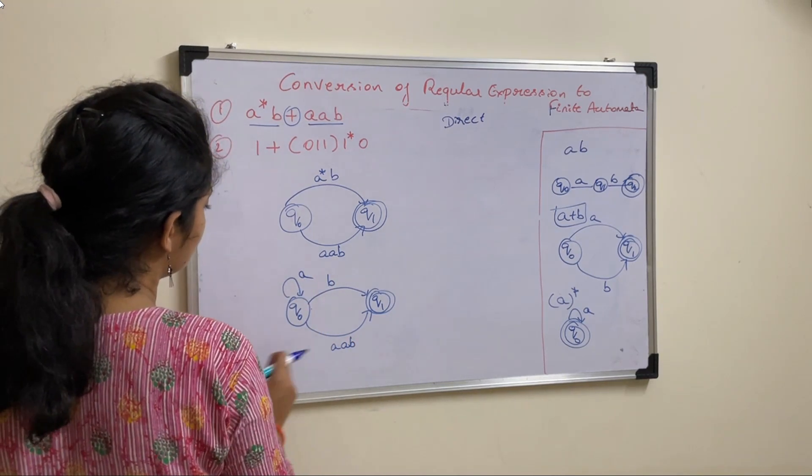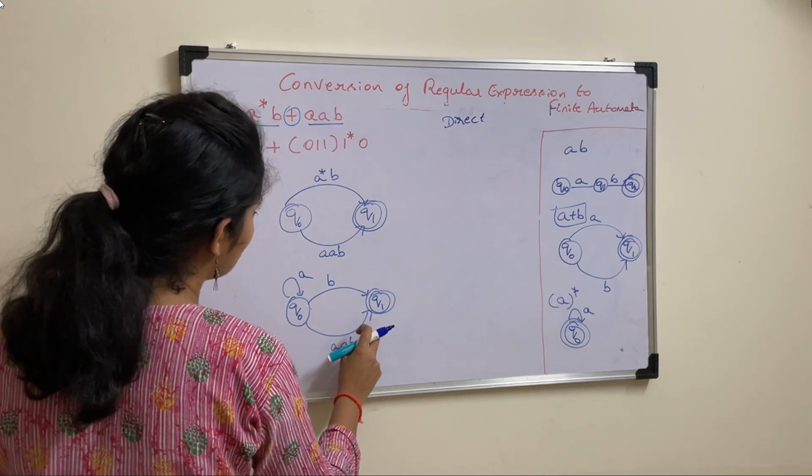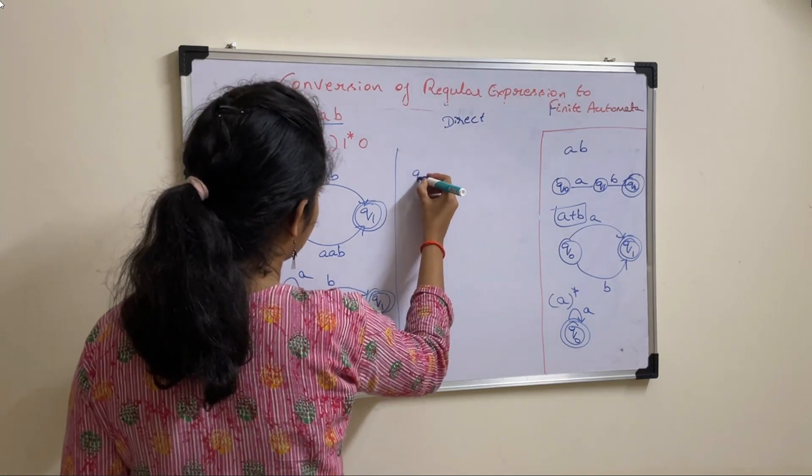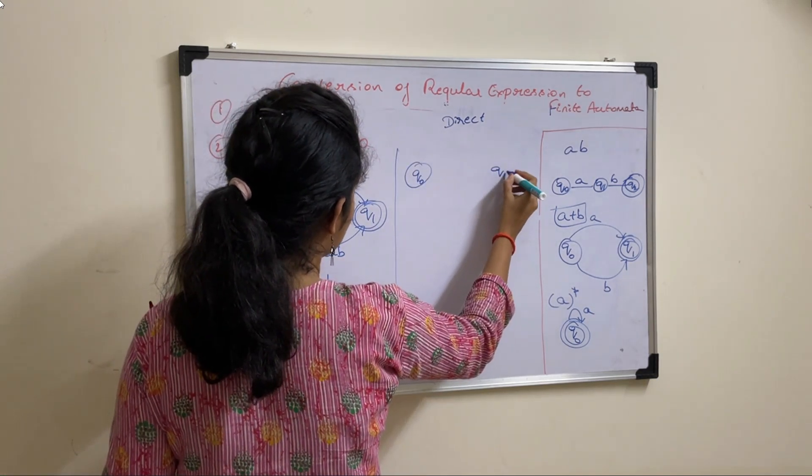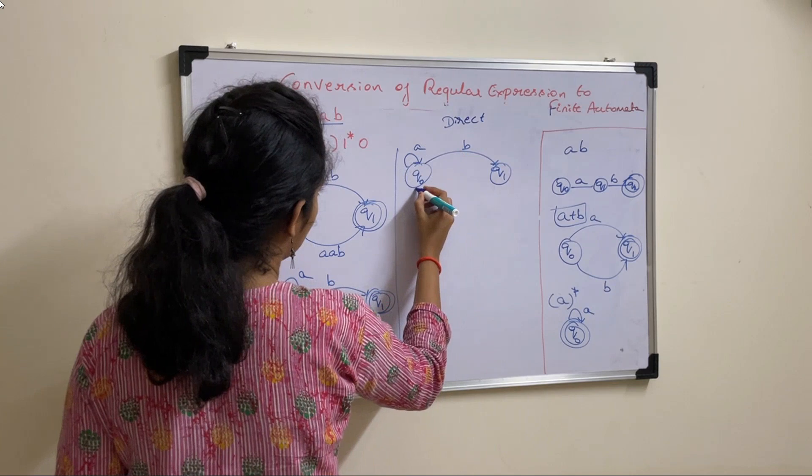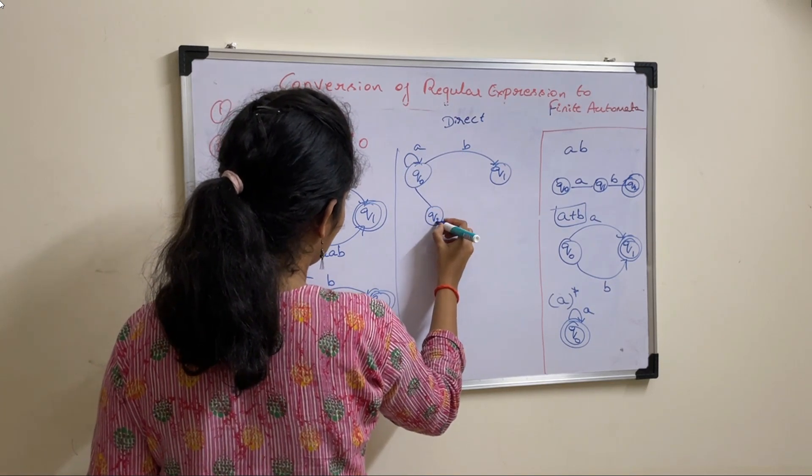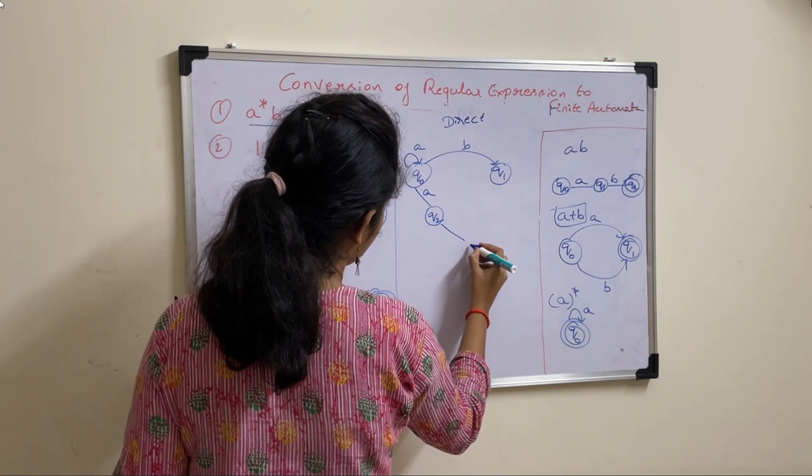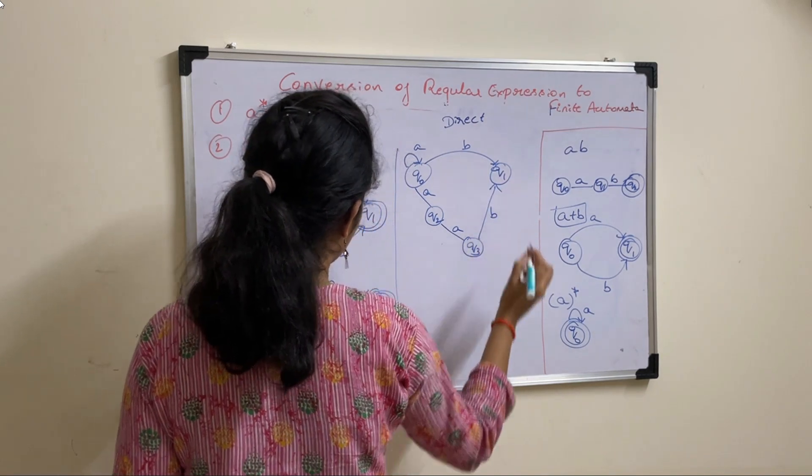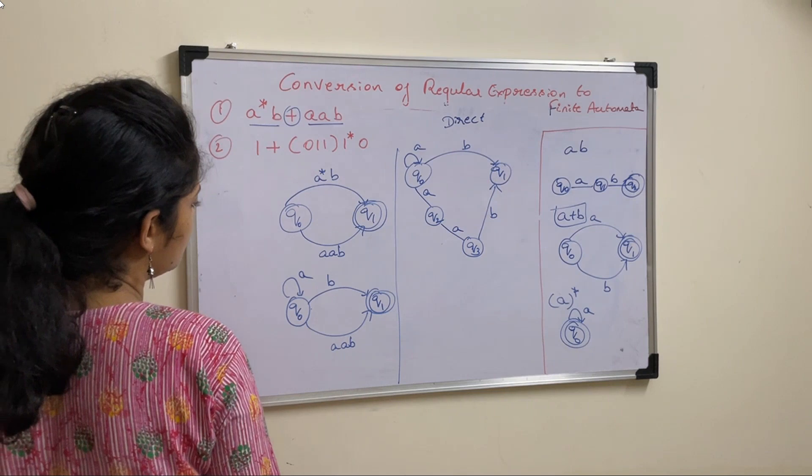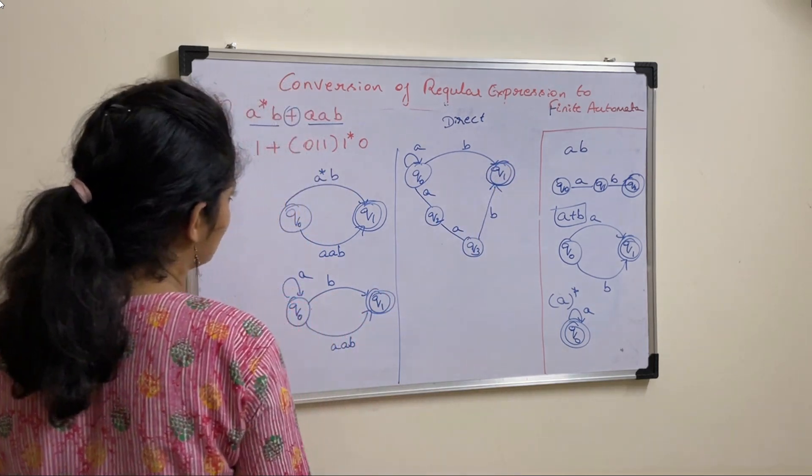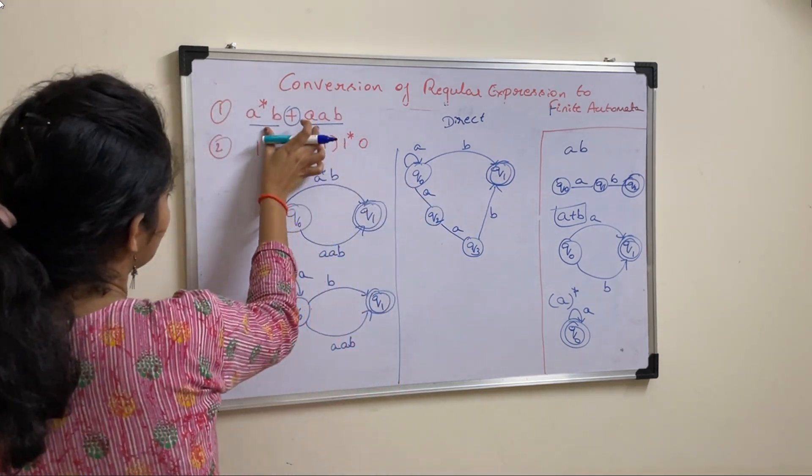Next, we will solve this bottom part now. This is AAB. AAB notation is like this. So, let us write it in this way. Q0, don't disturb the top one. It should be in the same way. A star B. And here, we can write it as, take one more state. A, A and this is B. So, this Q1 is your final state.